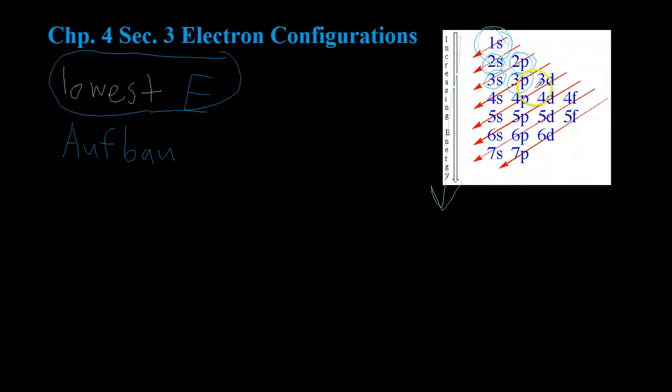But once you get up above 1 and 2, it follows a strange thing where the d suborbital is actually higher energy than the s suborbital of the next energy level. So what ends up happening is that electrons will fill up, for example, the 4s orbital before they fill up the 3d.